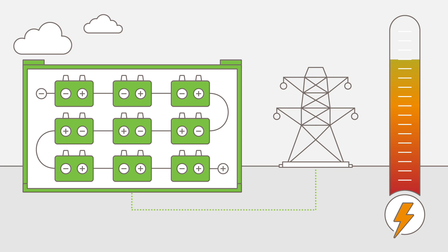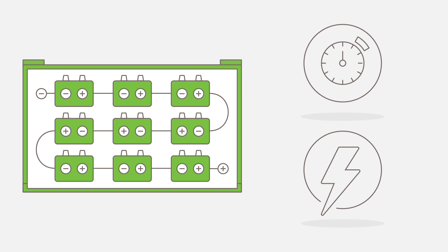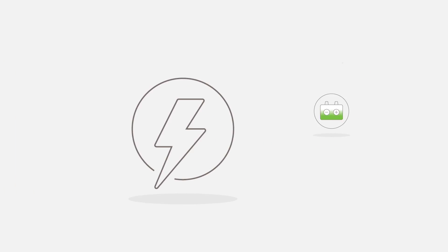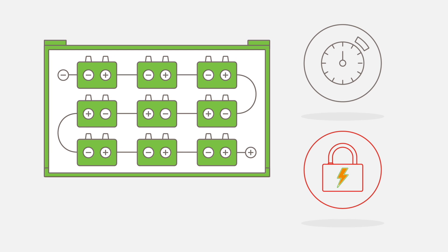Storing the energy enables the possibility of time-shifting the electricity from the time it is produced to the time when it's most valuable. Energy storage is accomplished by devices or physical media that store energy to perform a useful operation later. And a battery is one of these devices used to store energy.